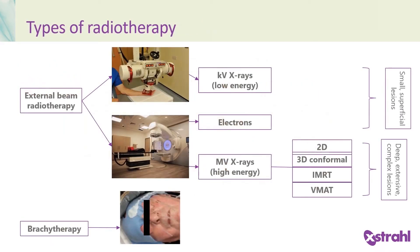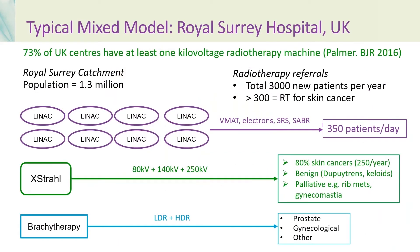There are various types of radiotherapy. Brachytherapy is short-range radiotherapy delivered via wires or seeds. External beam radiotherapy can be delivered in various ways — often megavoltage x-rays are used to treat complex targets deep within the body, but they tend not to be used so much for skin cancer. Electrons and kilovoltage x-rays are used for superficial lesions, particularly when they're small. 73% of UK centres have at least one kilovoltage radiotherapy machine. At the Royal Surrey County Hospital, with a catchment of 1.3 million population, there were 3,000 new patients per year, with more than 300 receiving radiotherapy for skin cancer. The centre had eight linear accelerators providing VMAT, electrons, stereotactic radiosurgery, and SABR, treating 350 patients per day.